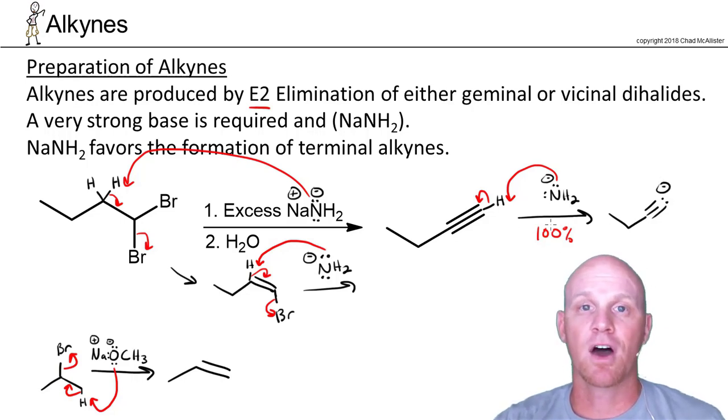The fact that this last step is 100% means that even if the rest of the steps don't produce a good yield of our alkyne, this last step will drag everything through according to Le Chatelier's principle.